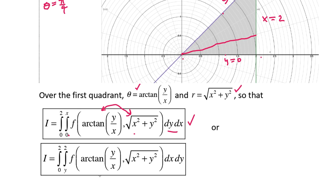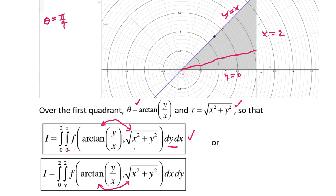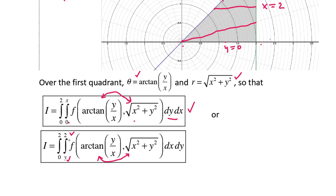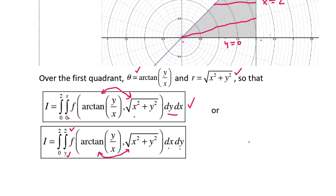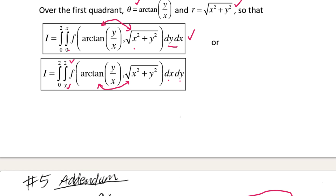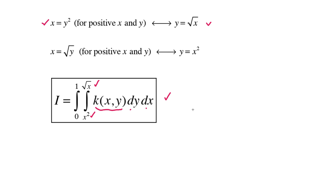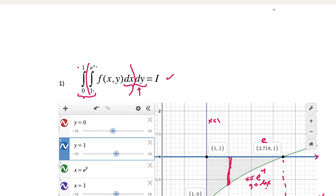The other way: integrating in the x direction first. For a fixed y, x goes from y out to 2, and then y goes from 0 to 2. So the answer is the integral from 0 to 2, y to 2, of f(√(x²+y²), arctan(y/x)) dx dy. There are some typos to correct, but that's the answer. Hopefully you learned something from all of this.